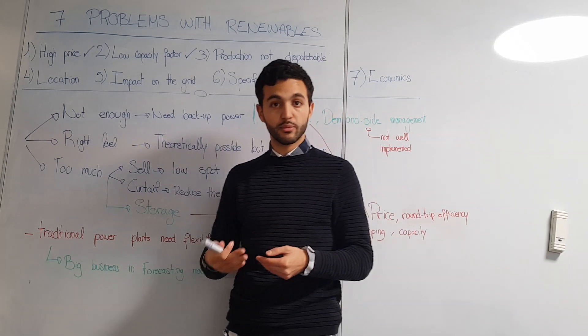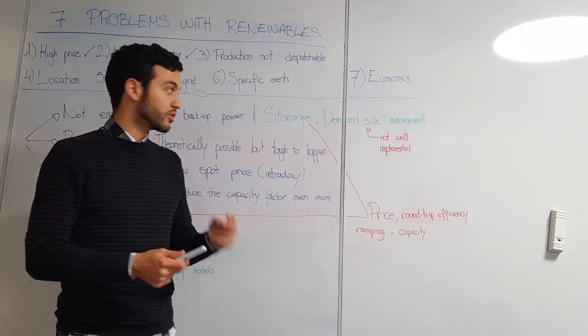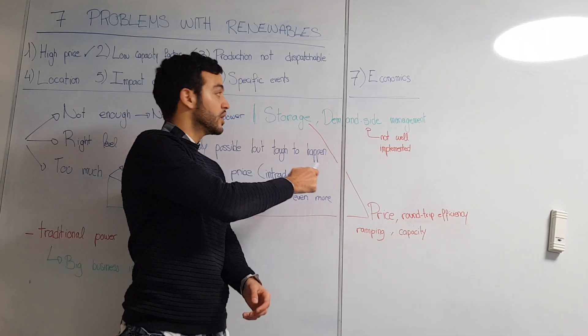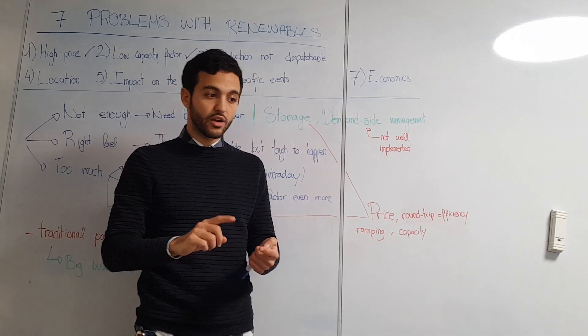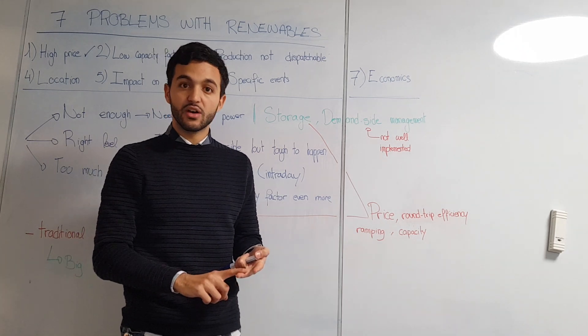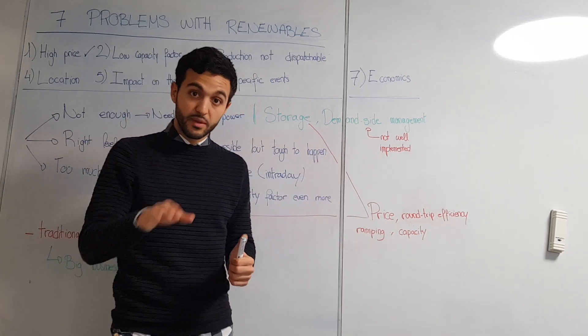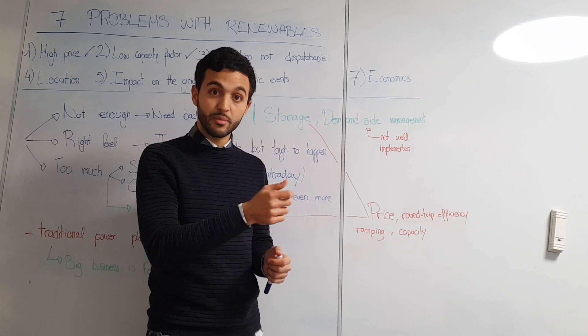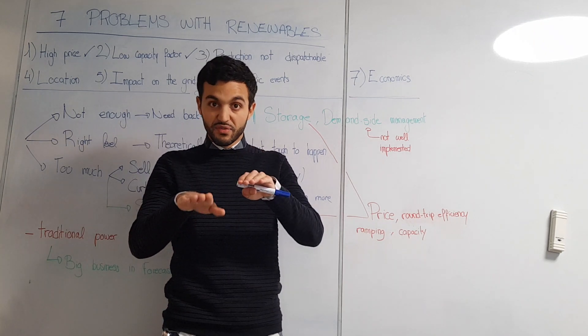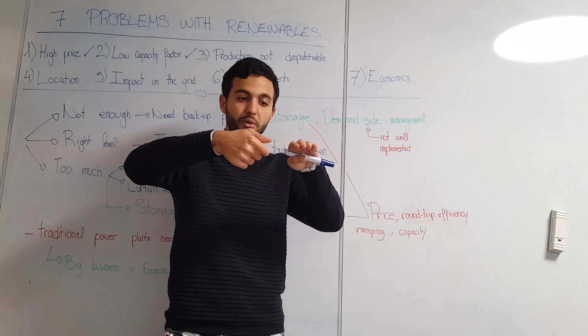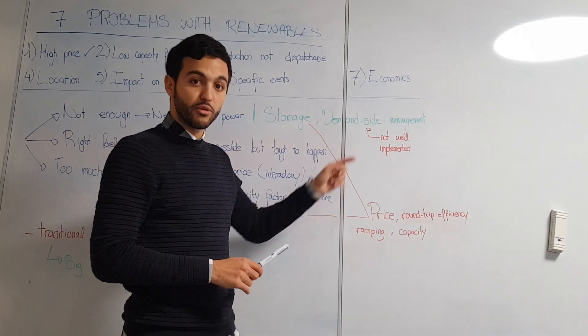In this case you will need a backup power provided by a traditional power plant like a gas power plant. Or today with smart grids more and more you have two new solutions: storage and demand side management. You cannot store electricity as itself, but you can convert electricity into other forms of energy like chemical with batteries, mechanical with dams or flywheels, or thermal with heat. Demand side management is the possibility to control the demand of electricity from the population. For example, the grid operator could lower the heater until you have an equilibrium. But this today is not really implemented, though it will play a big role in the future.